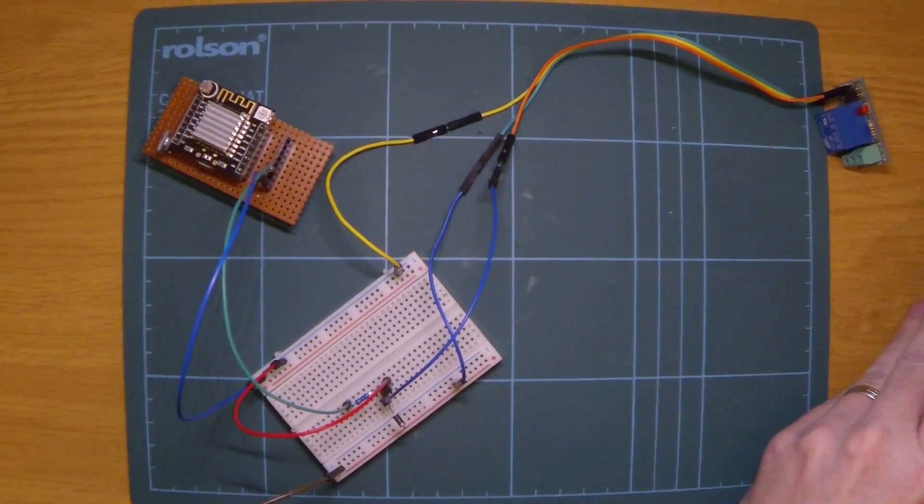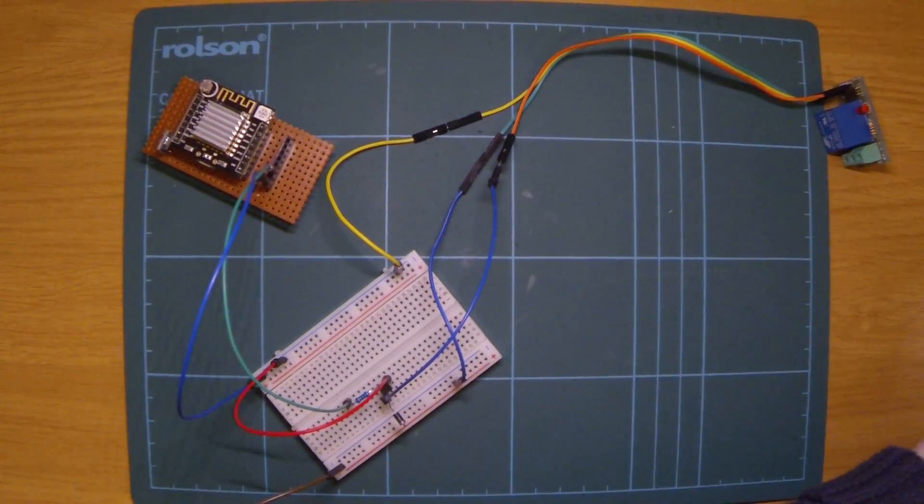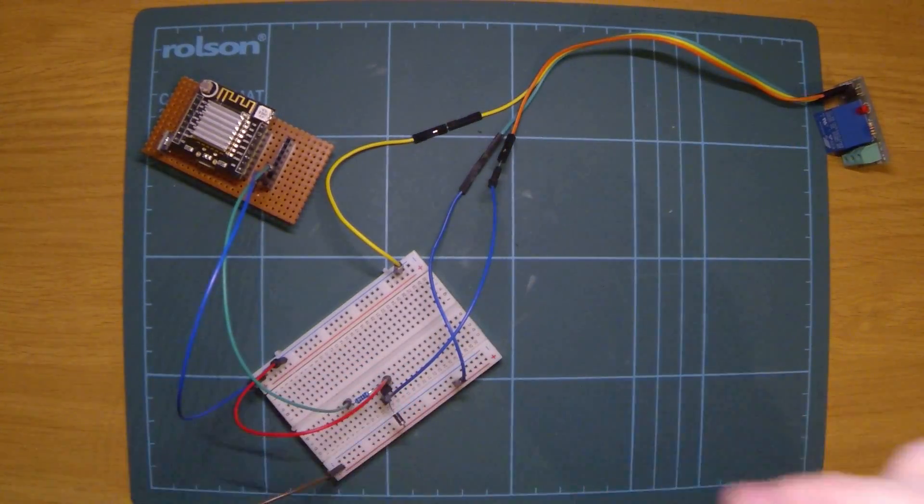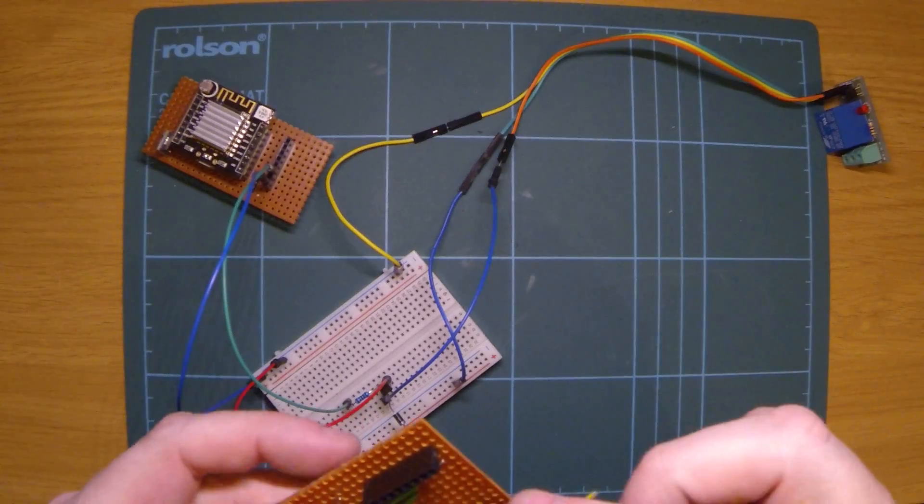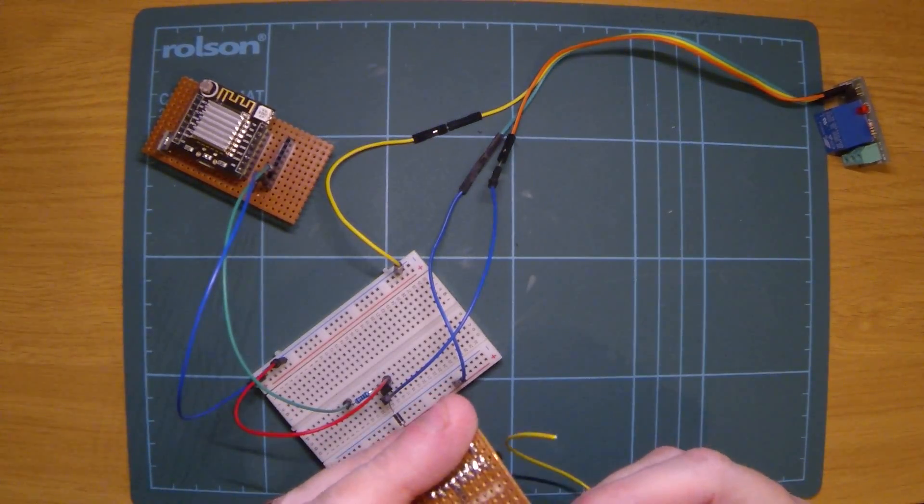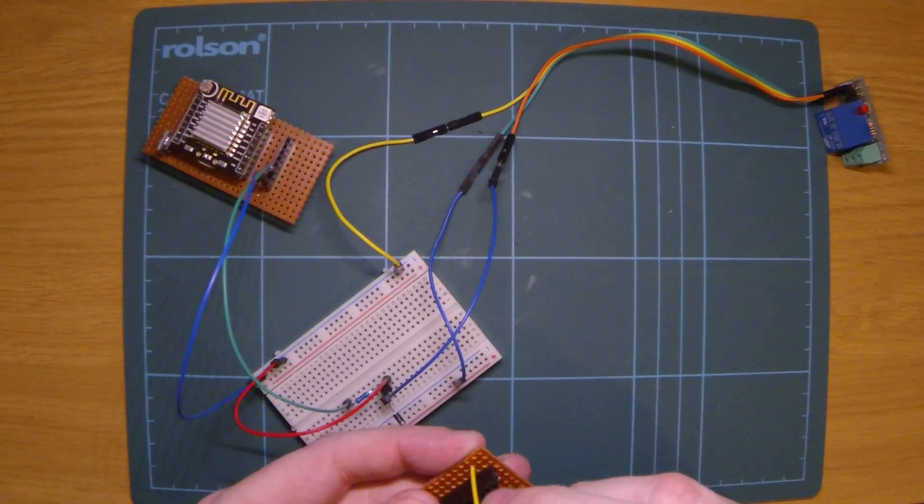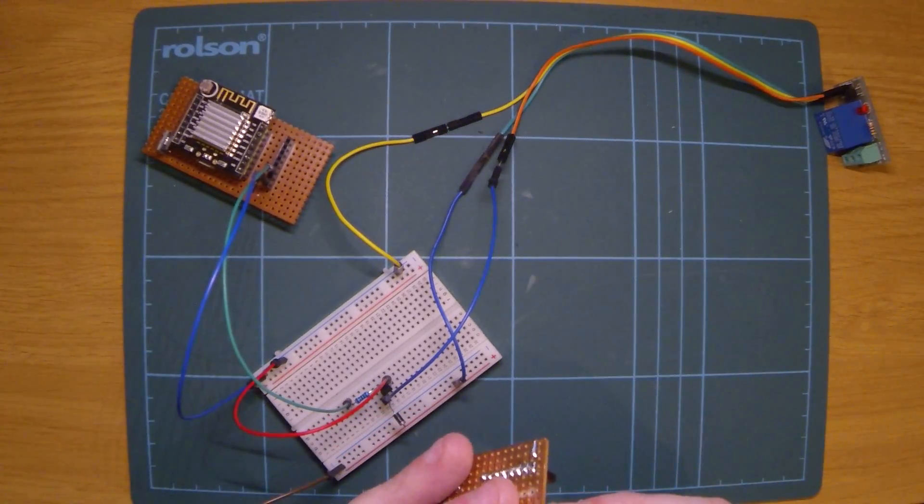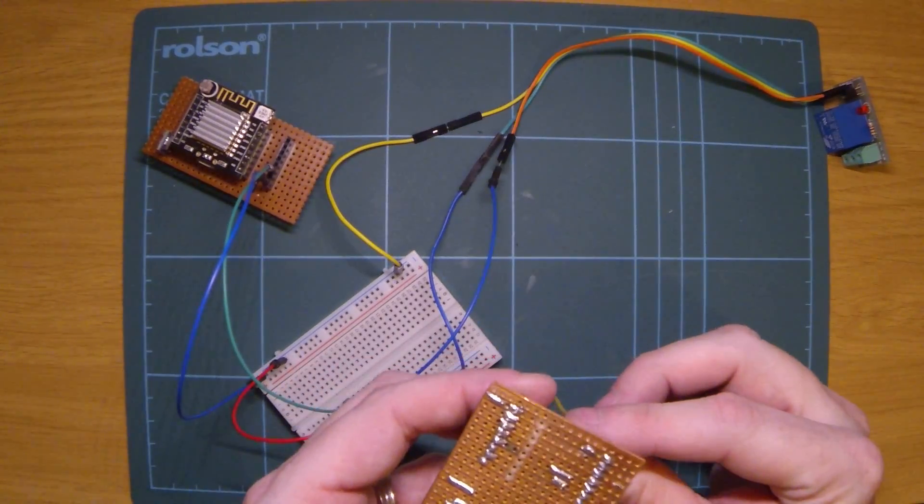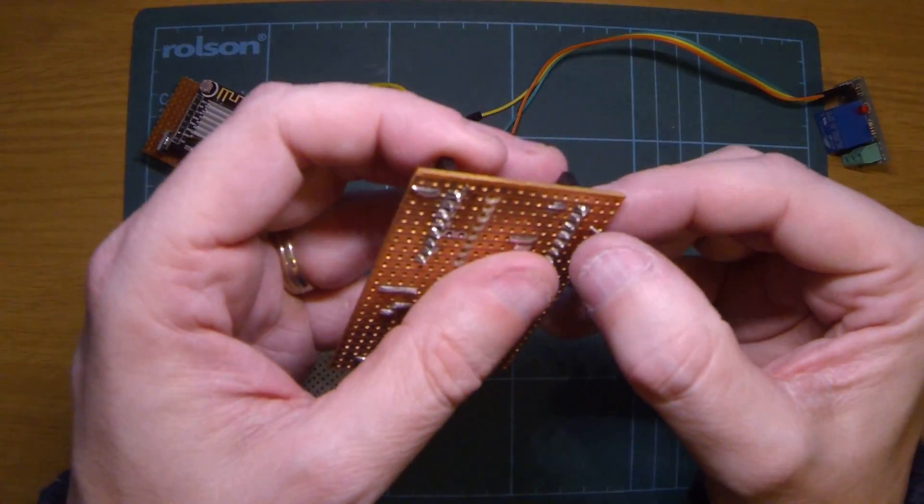The first thing I'm going to do is put a new wire in and solder it on GPIO15, which is the one next to ground, and that's the one I'll use for actually switching the relay on and off. I'll just get that soldered in there.